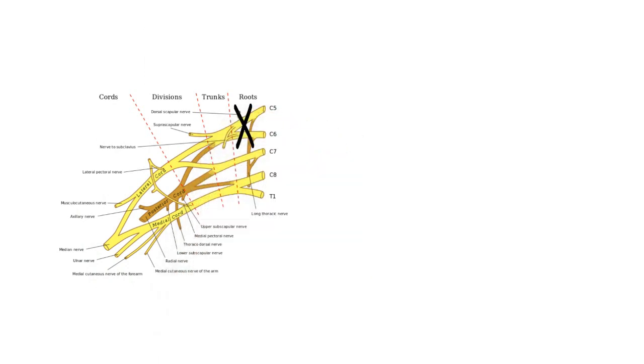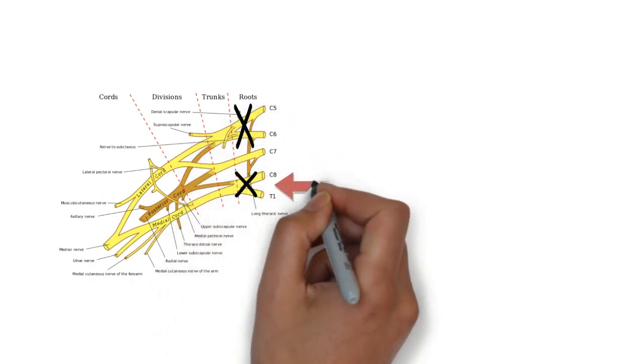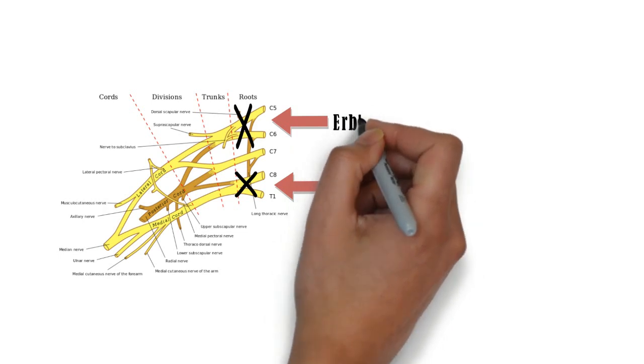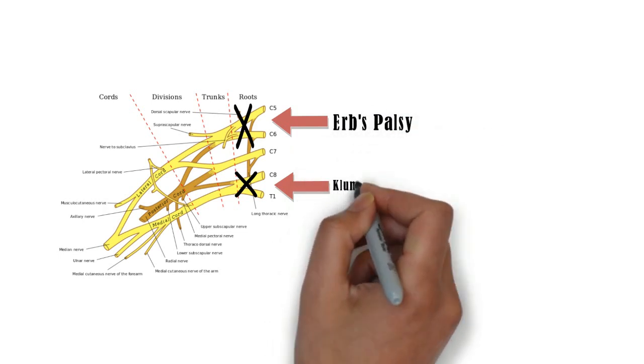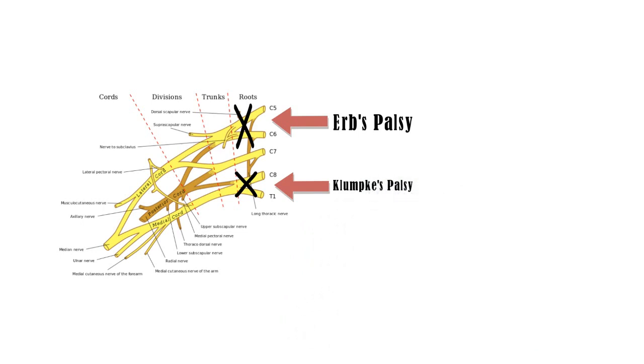In brachial plexus injury, Erb's palsy is due to injury to the upper root, that is C5 and C6, and Klumpke's palsy is due to injury to the lower root, that is C8 and T1.